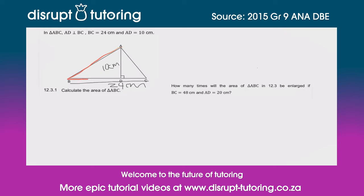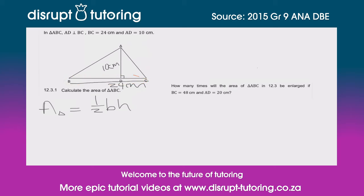We're looking at this triangle and they're asking us to calculate the area. You need to know the formula off by heart: the area of a triangle is equal to half base times height. The base is BC, and the height of the triangle refers to the perpendicular height — that line AD which touches the top of the triangle.